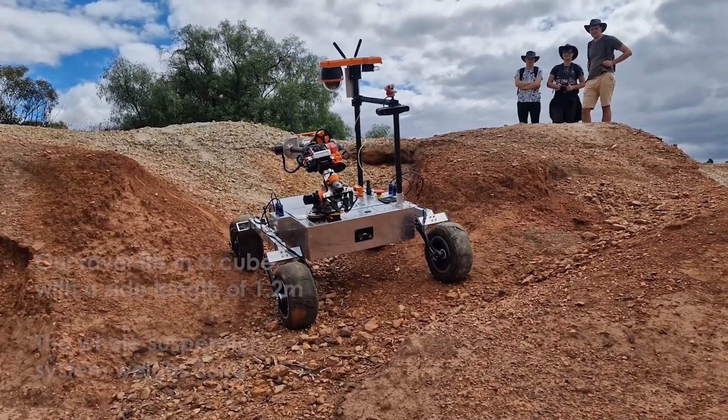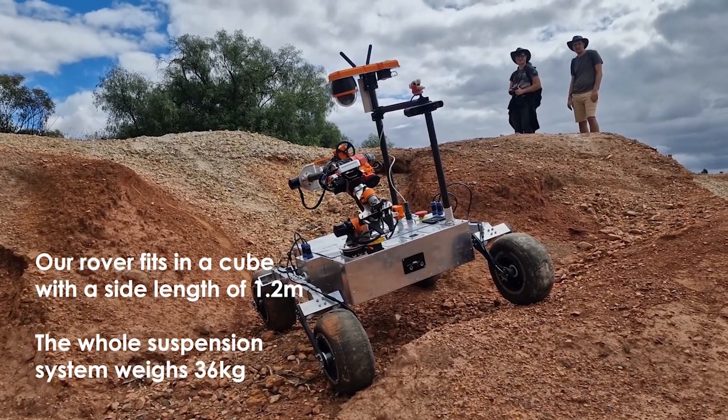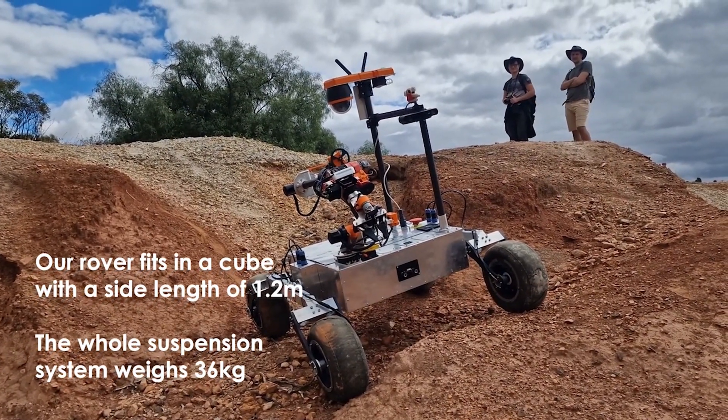To comply with the rules, our Rover fits in a cube with a side length of 1.2 meters. The whole suspension system weighs 36 kilograms.